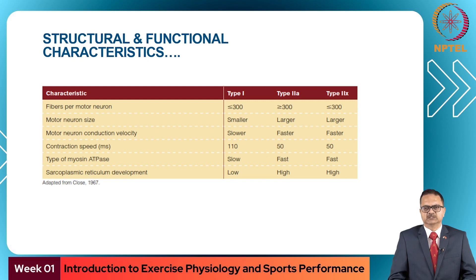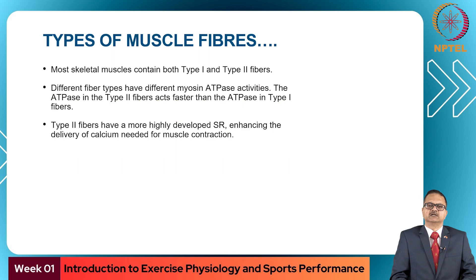Type 2x fibers have up to 300 fibers per motor neuron, larger motor neuron size, faster conduction velocity, contraction speed of around 50 ms, fast myosin ATPase activity, and high sarcoplasmic reticulum development. Most skeletal muscles contain both type 1 and type 2 fibers. Different fiber types have different myosin ATPase activity — ATPase in type 2 fibers acts faster than in type 1 fibers. Type 2 fibers have a more developed sarcoplasmic reticulum, enhancing the delivery of calcium needed for muscle contraction.